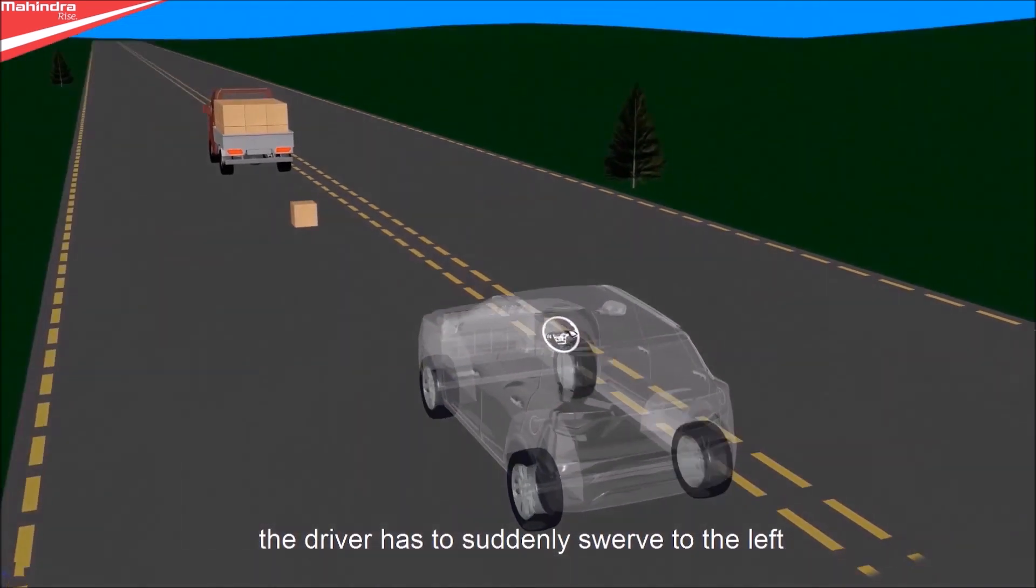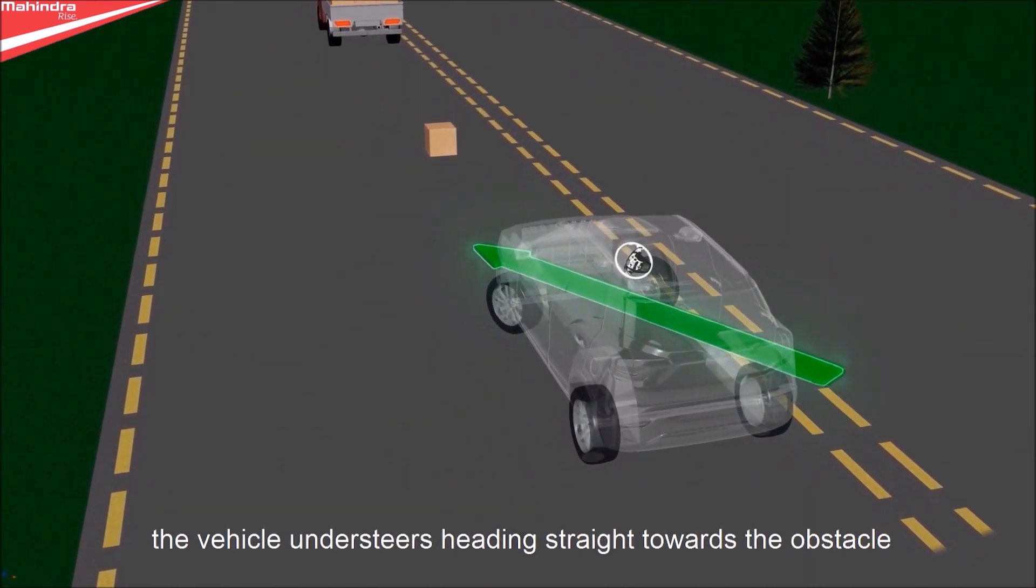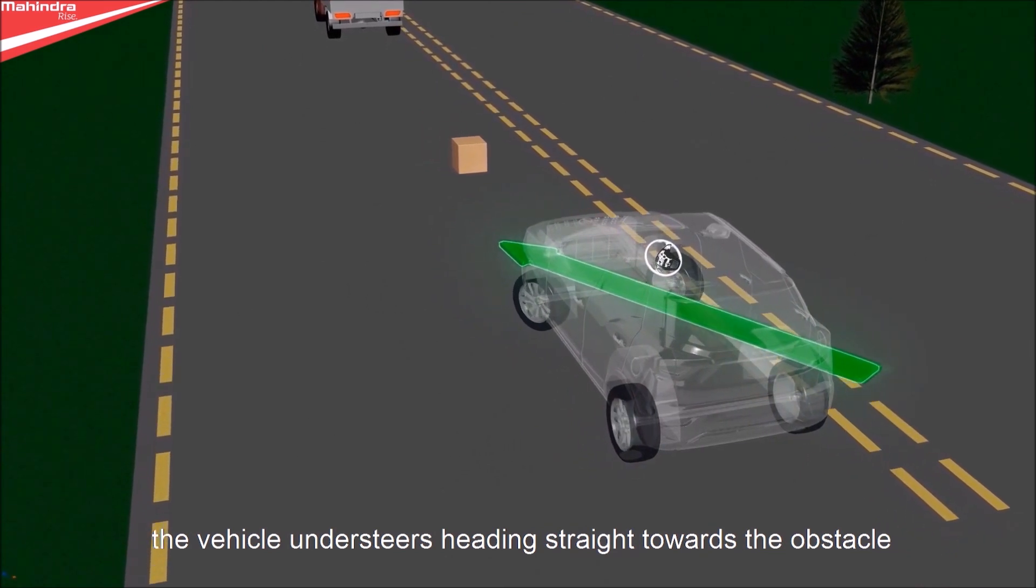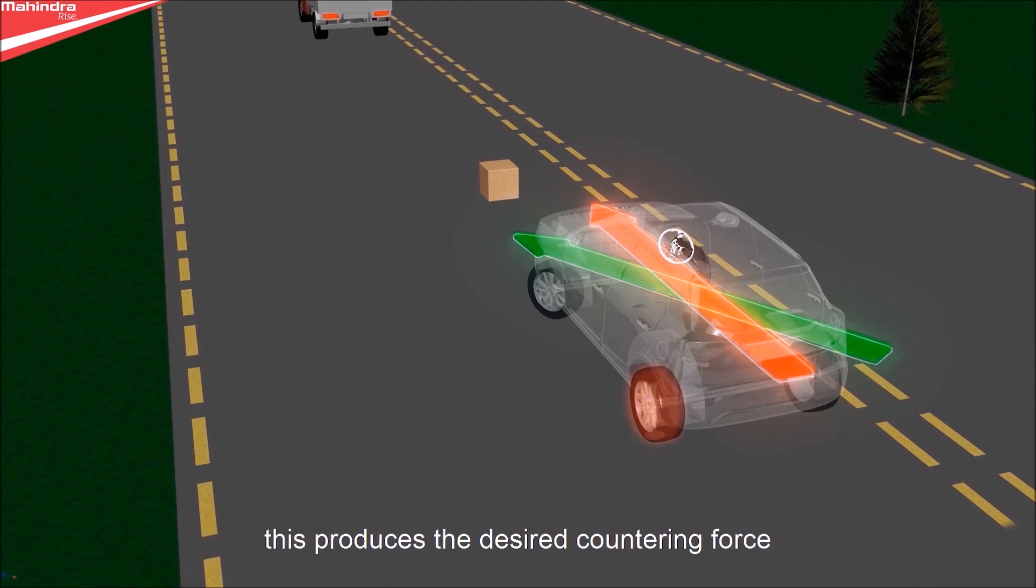What happens during a steering maneuver? The driver has to suddenly swerve to the left, but the vehicle does not respond to the driver's steering intention. The vehicle understeers, heading straight towards the obstacle. ESP briefly brakes the left rear wheel very sharply, producing the desired countering force so that the vehicle responds as the driver intended.